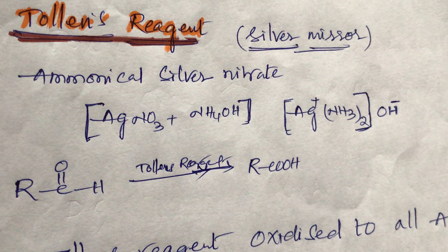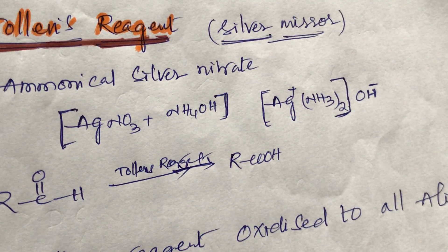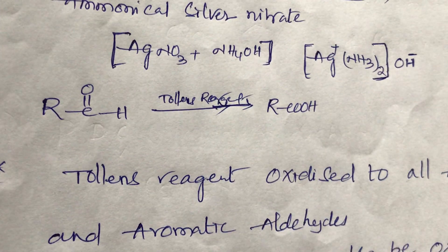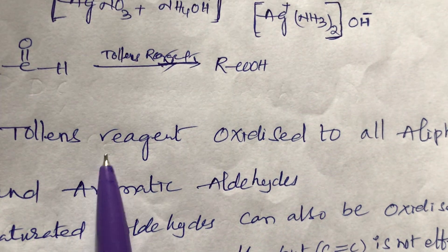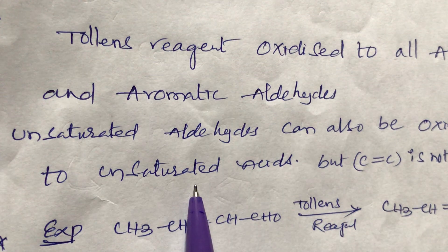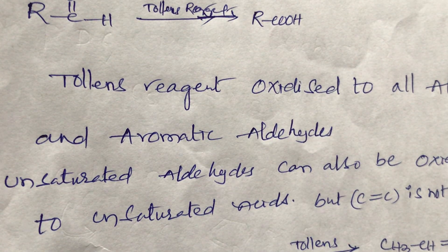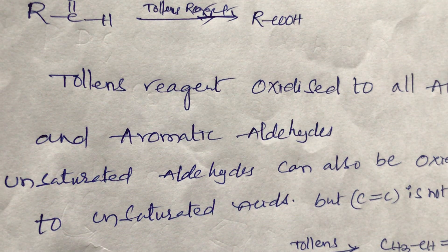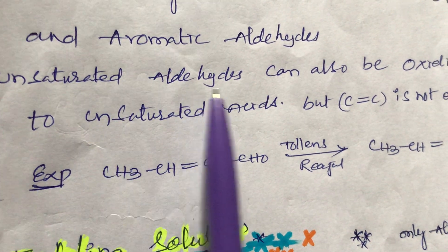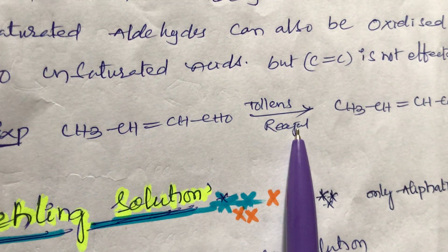Tollens' reagent is ammoniacal silver nitrate — a mixture of AgNO3 plus NH4OH — forming the complex diamminesilver ion [Ag(NH3)2]+. It is the silver mirror test. Tollens' reagent oxidizes all aliphatic and aromatic aldehydes. Unsaturated aldehydes can also be oxidized to unsaturated acid, but the double bond is not affected.